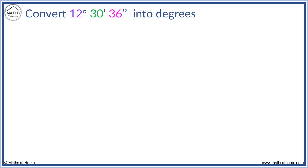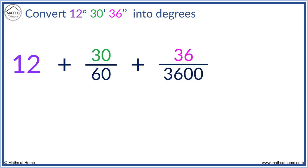In this example, we convert 12 degrees, 30 minutes, and 36 seconds to degrees. We take the 12 degrees. We add the number of minutes, divided by 60. And we add the number of seconds, divided by 3,600.